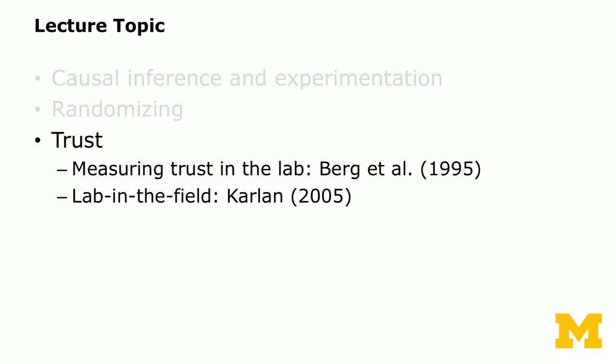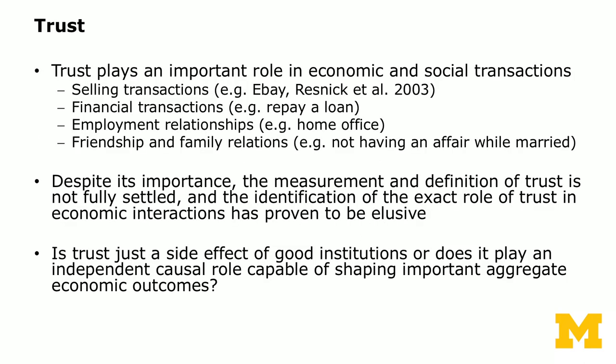The last topic we'll touch this week is using experiments as a measurement, and we'll use an example which is the trust game. We'll go through a classic study which measures trust in the lab — this has been replicated in many different labs — and then an example where the researcher measures trust in the field. This is an example of lab and field, using measurement to predict people's real economic behavior, which is a very important and promising aspect of experimental methods.